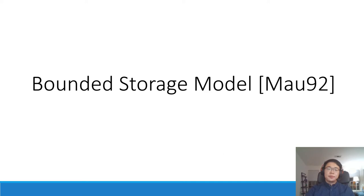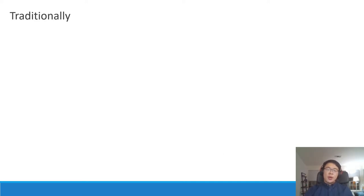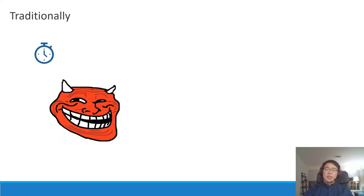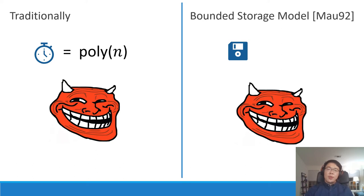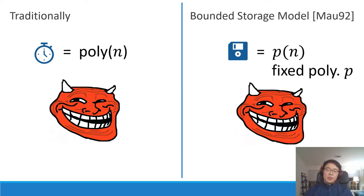So what is the Bounded Storage Model? Traditionally in cryptography, we imagine the adversary is time-bounded — needing to perform the attack within a polynomial amount of time in the security parameter n. However, in the Bounded Storage Model, first put forward by Udi Maurer in 1992, the adversary can take as long as it wants, but we bound the amount of memory bits it can use throughout the entire attack to at most p(n) bits, where p is a fixed polynomial. Concretely, p could be something like n², while honest parties only use memory around level n — an inherent quadratic gap.